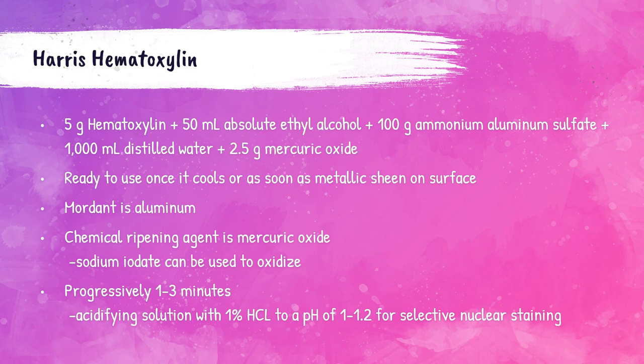The mordant in Harris hematoxylin is aluminum, and the chemical ripening agent is mercuric oxide — though sodium iodate can also be used. It is most frequently used as a progressive stain for one to three minutes for consistent nuclear staining. For very selective nuclear staining, it is recommended to acidify the Harris hematoxylin solution using 1% hydrochloric acid to a pH of 1 to 1.2.